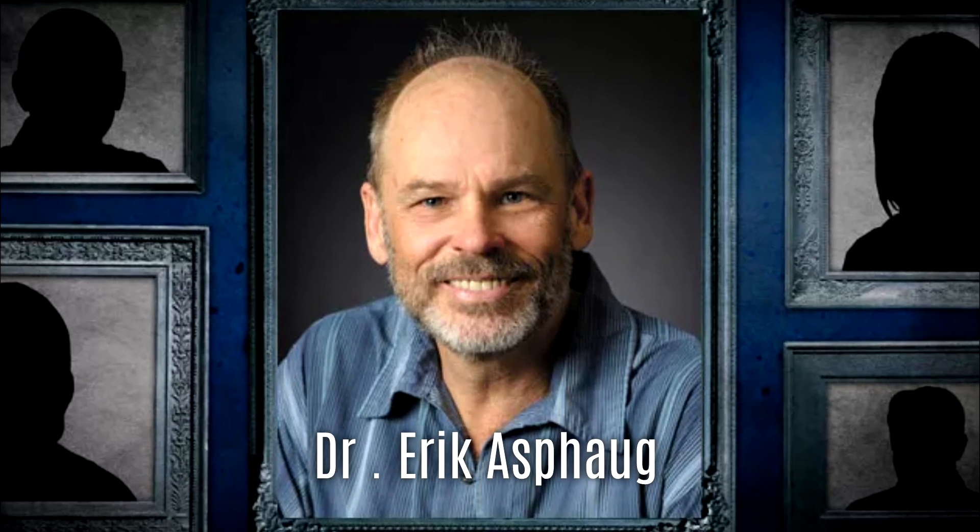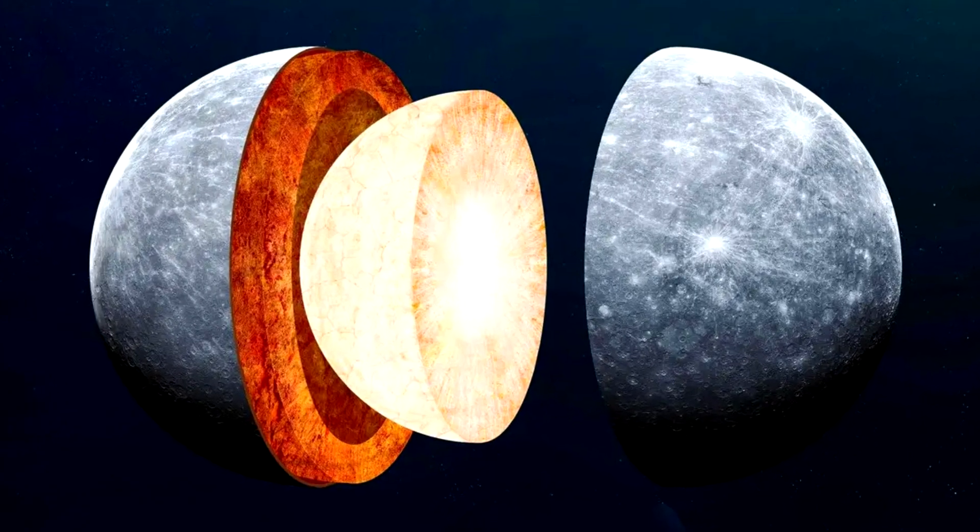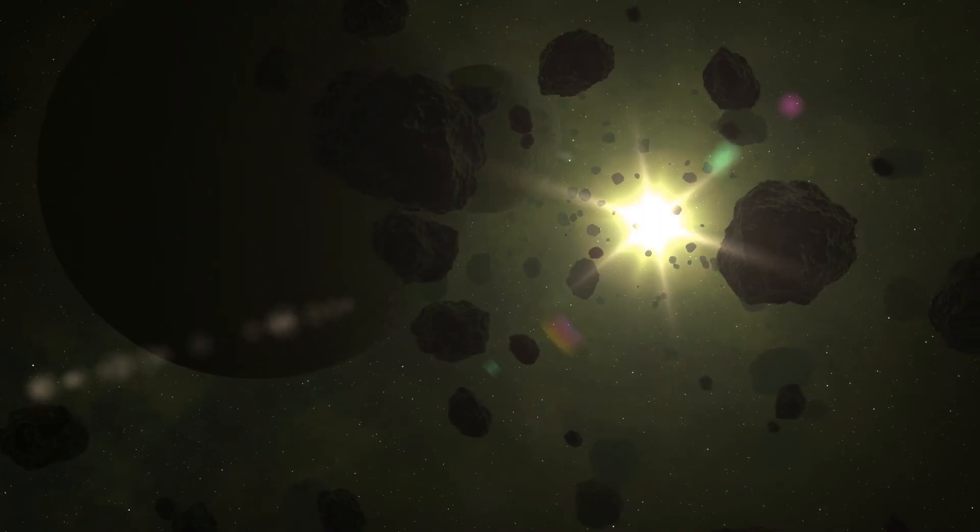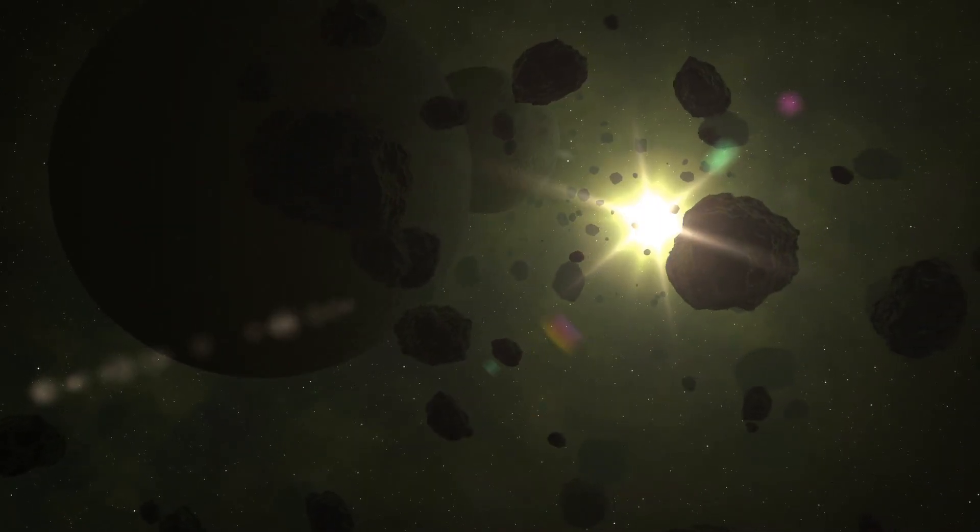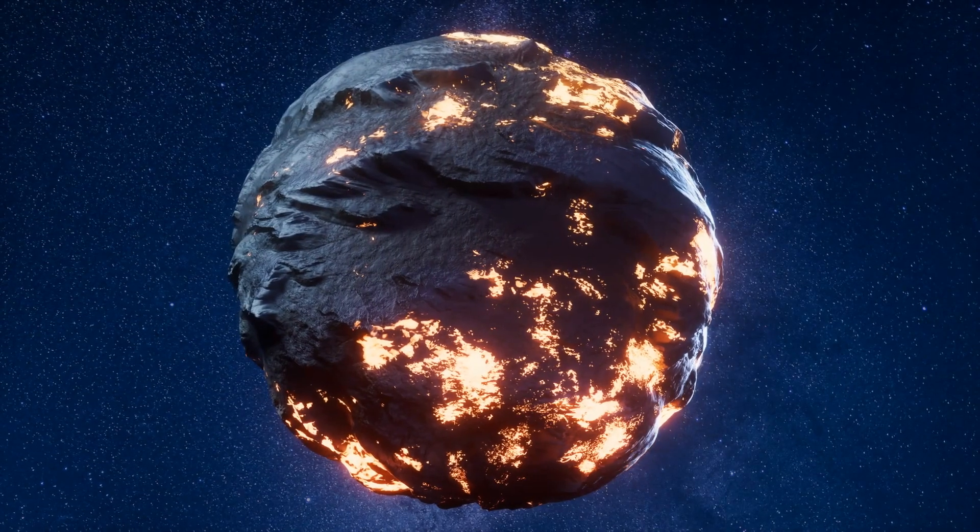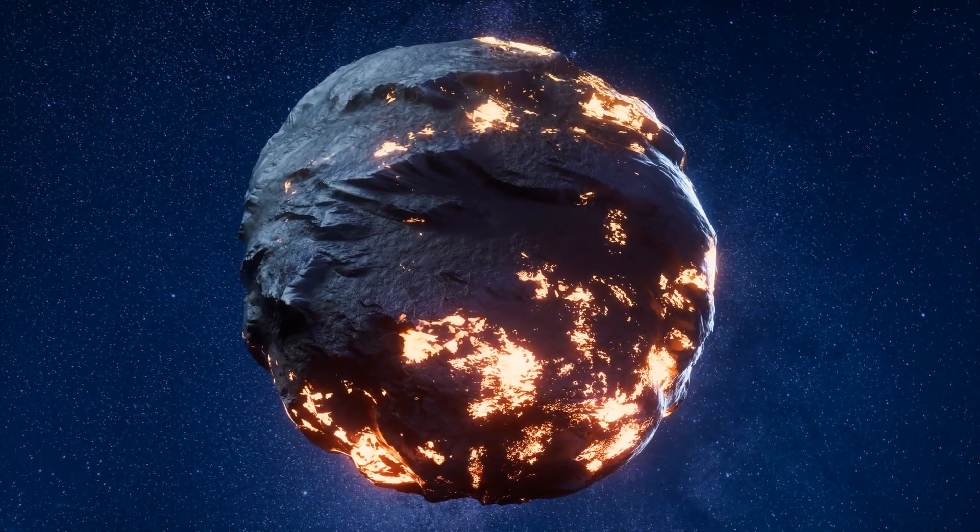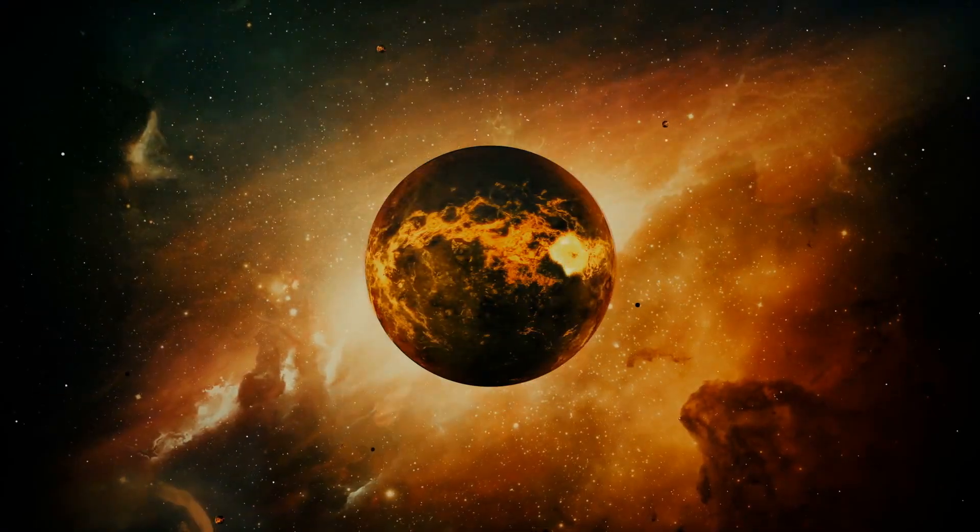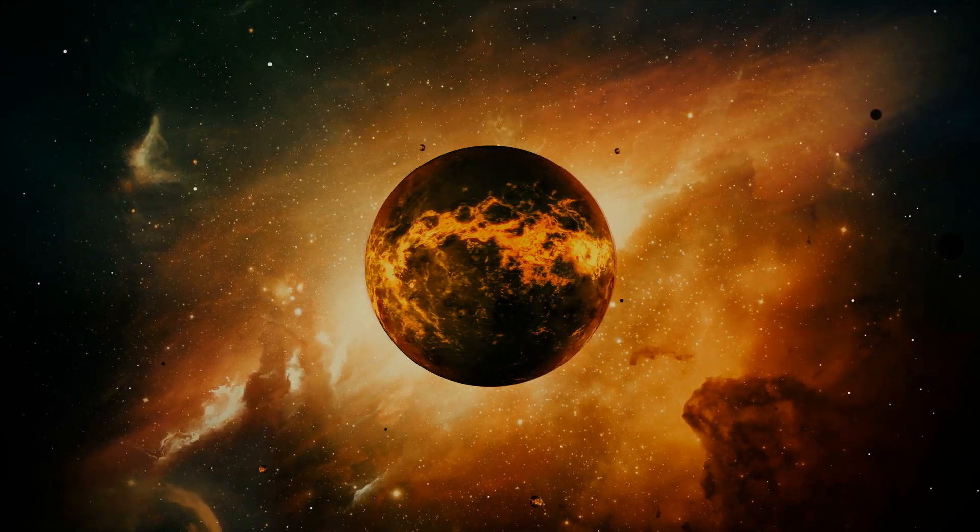Why does Mercury's core dominate so much of the planet's mass? One hypothesis, proposed by Dr. Ericus Fogg from the University of Arizona, is known as the hit-and-run scenario. This theory suggests that Mercury might have once been a larger planet, but a massive collision early in the solar system's history stripped away much of its mantle and crust, leaving behind the dense, iron-rich core we see today.